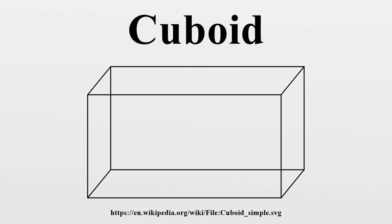That is, like a cube, a cuboid has 6 faces, 8 vertices, and 12 edges, along with the rectangular cuboids. Any parallelopiped is a cuboid of this type, as is a square frustum.